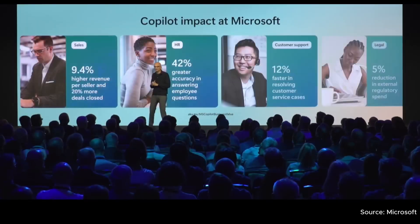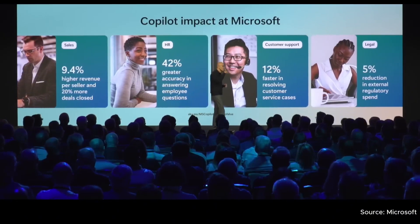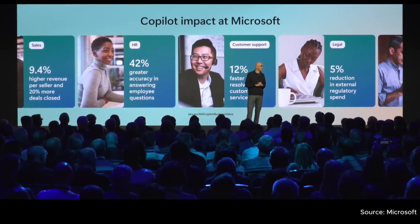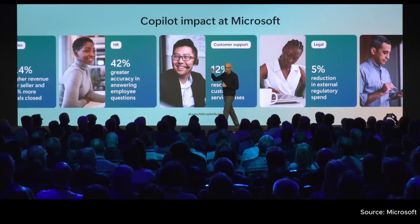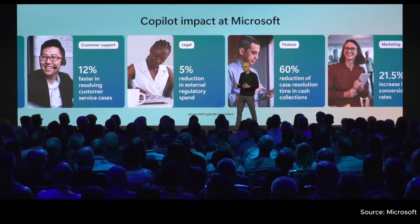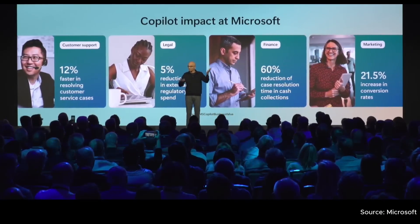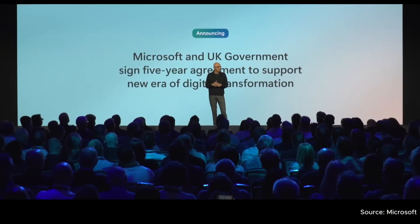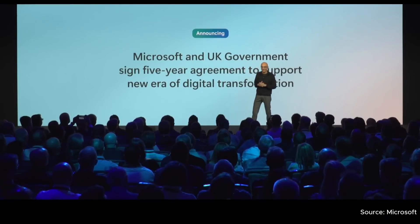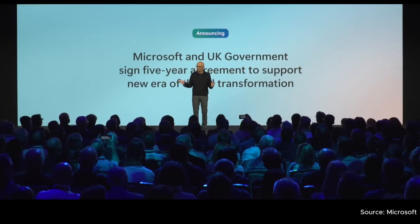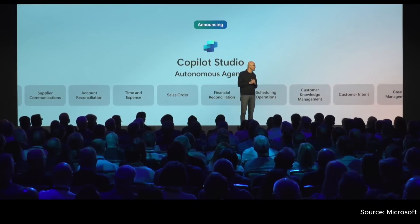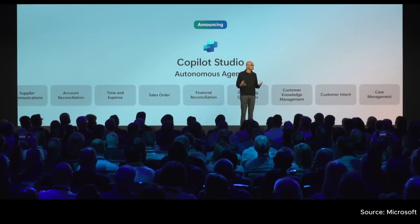This has been tremendous. Right at Microsoft, looking at functions like sales and marketing, we now have quantitative results — double-digit increases in throughput. We have at-scale evidence of how these tools are fundamentally changing things, increasing value and reducing waste. We're also making an announcement with the government of the United Kingdom to ensure that this diffusion of technology happens not just in the private sector, but across the public sector. We are pleased to announce the next big step in the AI platform: autonomous agents that you can create.